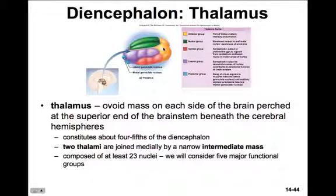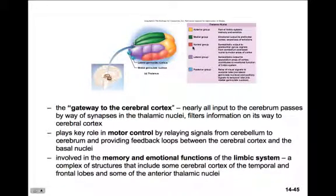There are many separate nuclei in each of these regions, but you just need to understand the basic regions. The thalamus is said to be the gateway to the cerebral cortex because nearly all input to the cerebrum passes by way of synapse into the thalamic nuclei first. The thalamus filters information on its way to the cerebral cortex, plays a key role in motor control by relaying signals from the cerebellum to the cerebrum, and provides feedback loops between the cerebral cortex and the basal nuclei. It also plays a key role in memory and emotional functions of the limbic system — a complex of structures including some cerebral cortex of the temporal and frontal lobes and some of the anterior thalamic nuclei.